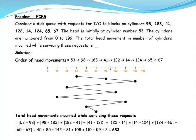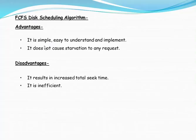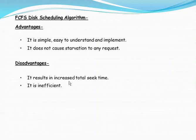Therefore, 632 is the total number of head movements obtained by applying the FCFS algorithm. The advantages of this algorithm are that it is simple, easy to understand and implement, and it does not cause starvation — requests are processed in arrival order, so no request waits indefinitely. The disadvantages are that it results in increased total seek time and is therefore inefficient.